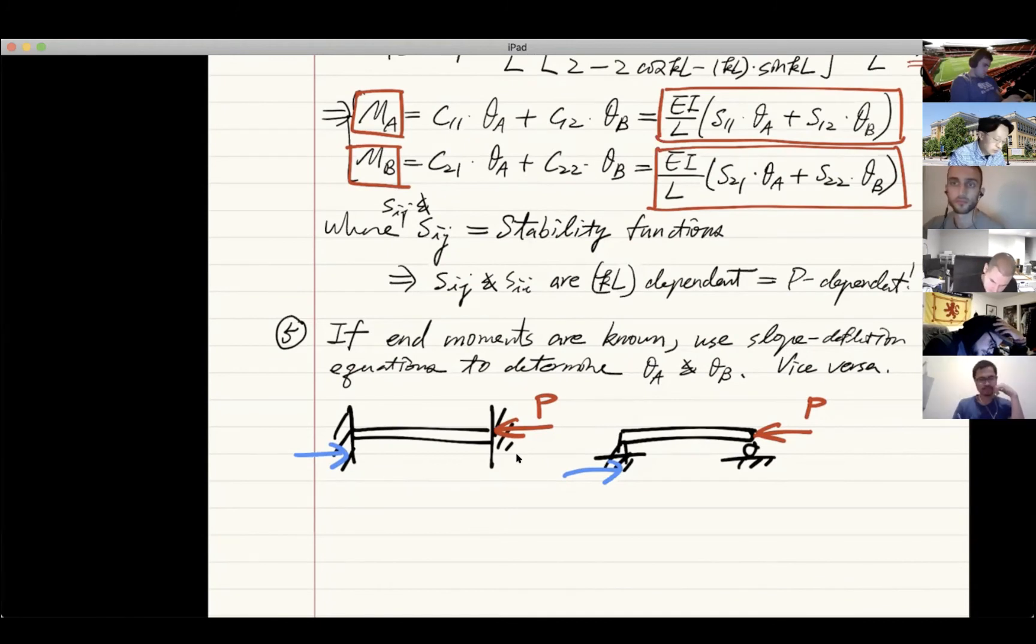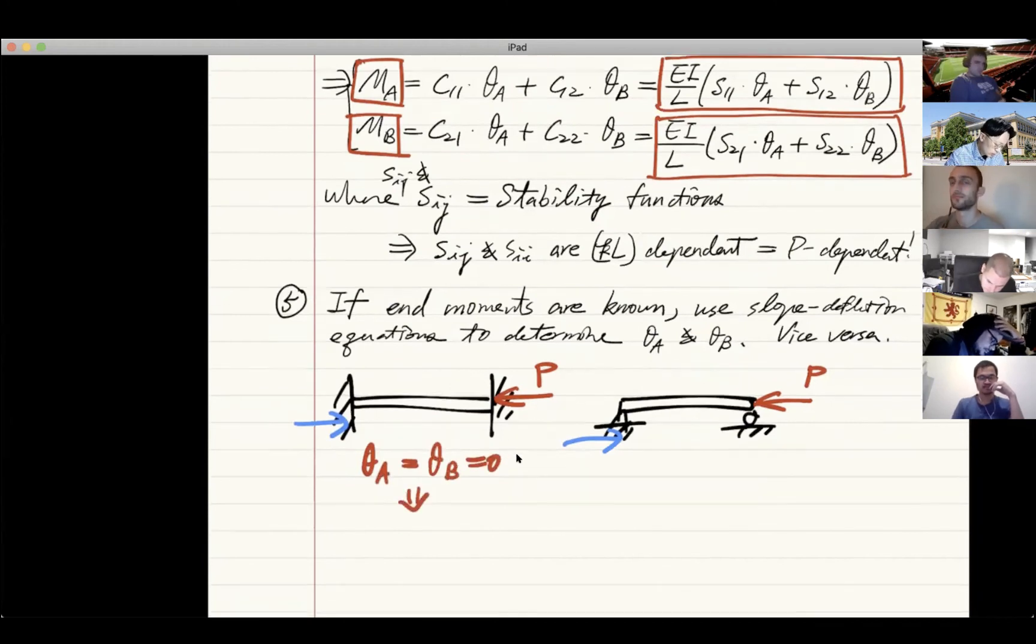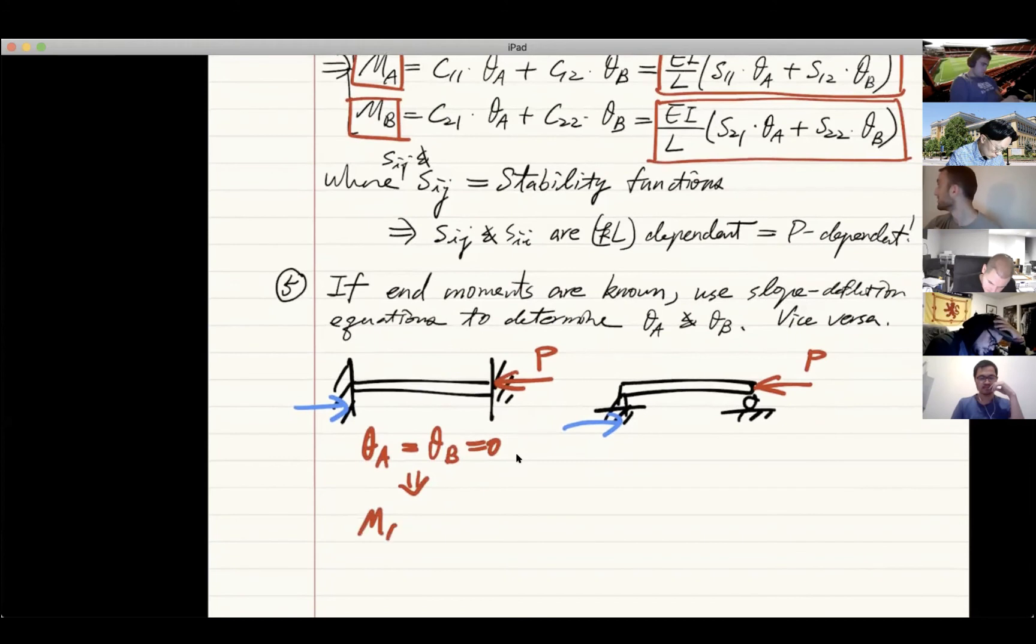In the case on the left, the order is because we know deflection is zero. So you use theta A equals theta B is zero to find MA and MB.